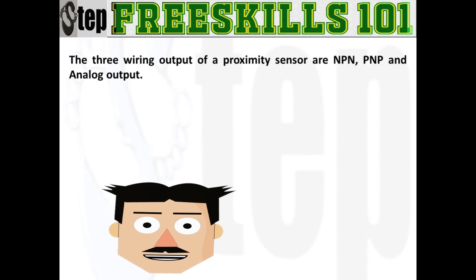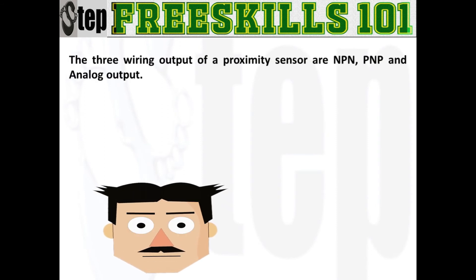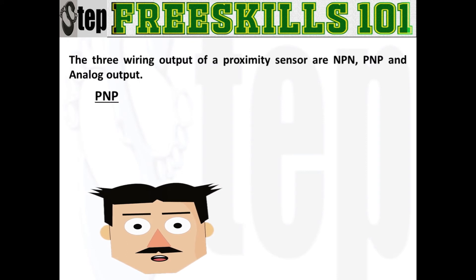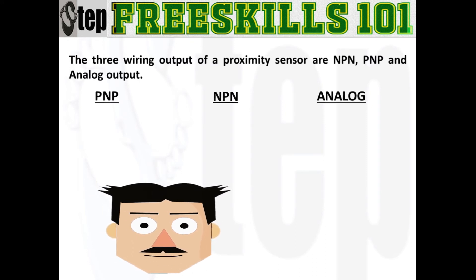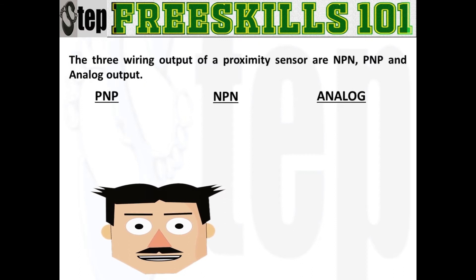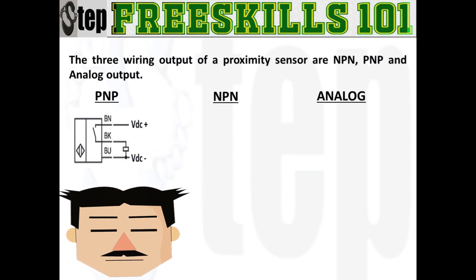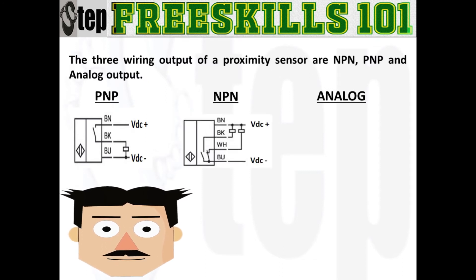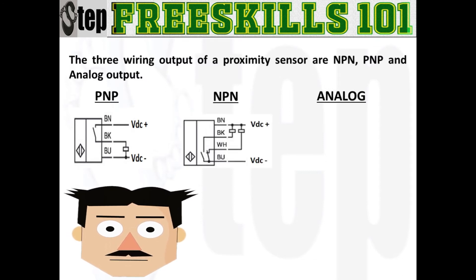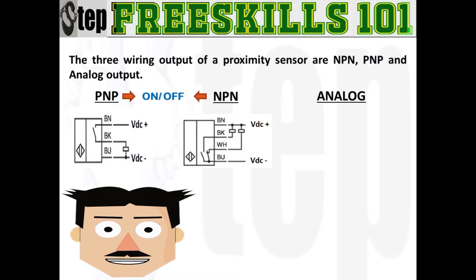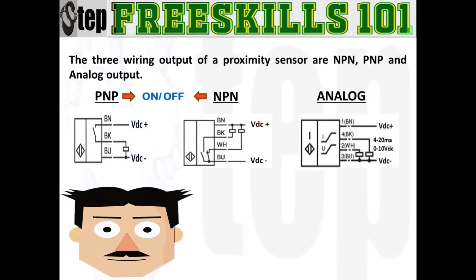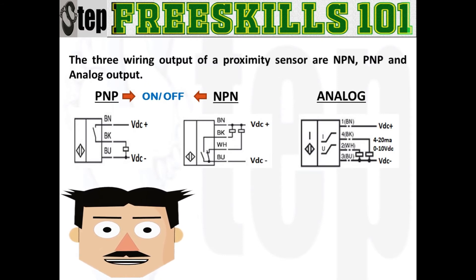Among the different technologies of proximity sensors, there are three types of wiring output: NPN, PNP, and analog output. Both NPN and PNP are on and off, therefore they are considered as digital input devices. And last, the analog output of 4 to 20 milliamps or 0 to 10 DC voltage.